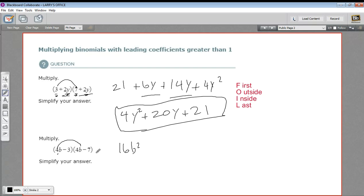Now your outside terms, 4b times a negative 7. We've got to be careful of signs on this one. So that is minus 28b. And then our inside terms, negative 3 times 4b. That's minus 12b.